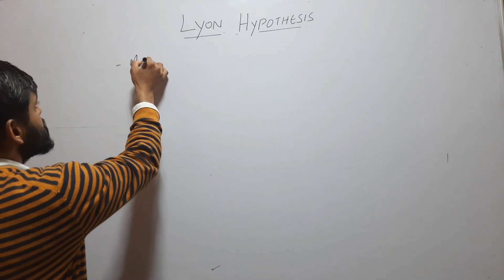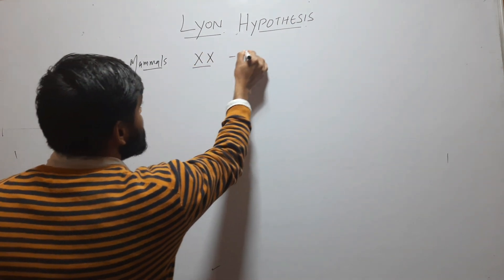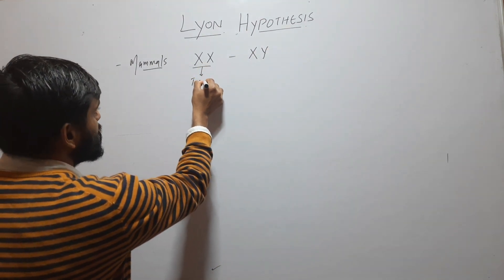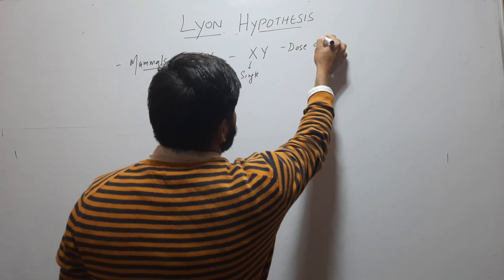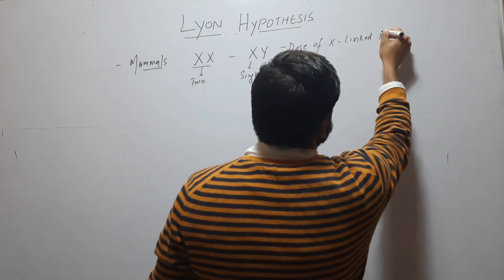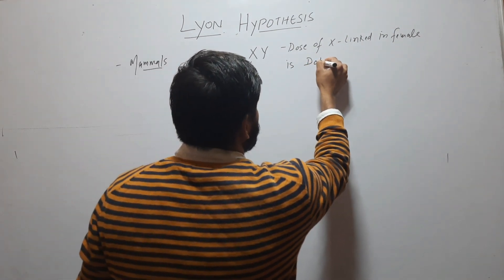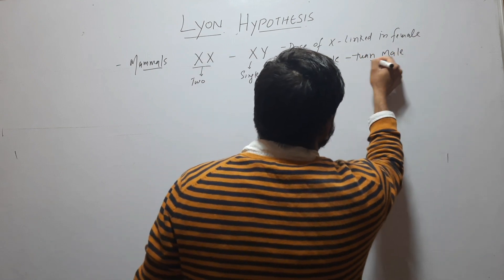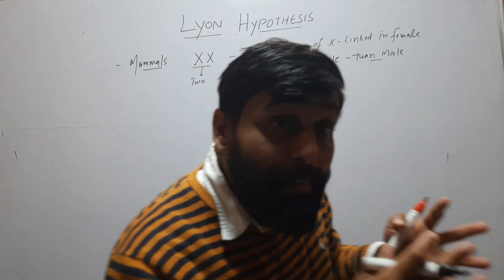In mammals, we know that females have XX and males have XY chromosomes. So here females have 2X but males have a single X. So the dose of X-linked genes in females is double that of males. This situation is very detrimental — when there is a difference in the dose of a gene, it may be lethal sometimes.